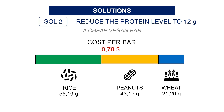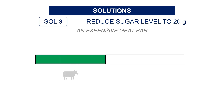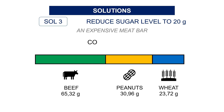But what about sugar? Let's say we have the ambitious objective to reduce the sugar level to 20 grams. Can we reach the initial protein level without using much meat? The answer is no. We can label this bar as a meat bar, as more than 50% of the total quantity is beef. This is driving the cost up — now your bar is $3 more expensive than the initial one. You get a sense of how linear programming helps you find an optimal recipe and run several scenarios to support the right business decision.